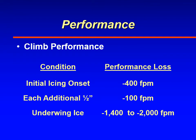Here are some other numbers they came up with after calculations. With the initial onset of ice, the King Air lost 400 feet per minute in climb performance. So as soon as ice forms, you're losing performance. Each additional half inch of ice decreased the climb performance of the aircraft by 100 percent. The worst performance loss was with underwing ice, due to a positive feedback mechanism: as you gain ice, you increase your angle of attack, which increases collection efficiency, picking up even more ice. You pitch up, you get more ice — it's a vicious cycle.